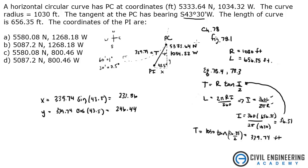Now because we know this stuff right here, all we need to do is subtract our values and get a new coordinate for PI. So let's get our northing. The northing is going to be 5333.64 minus 246.44, which is going to equal 5087.2. And the westing is going to be 1034.32 minus 233.86, which equals 800.46 west.